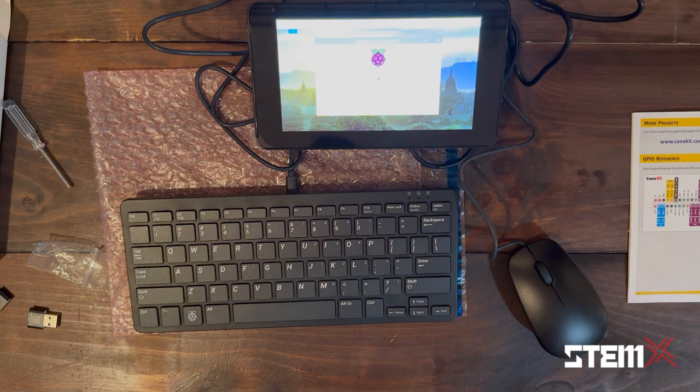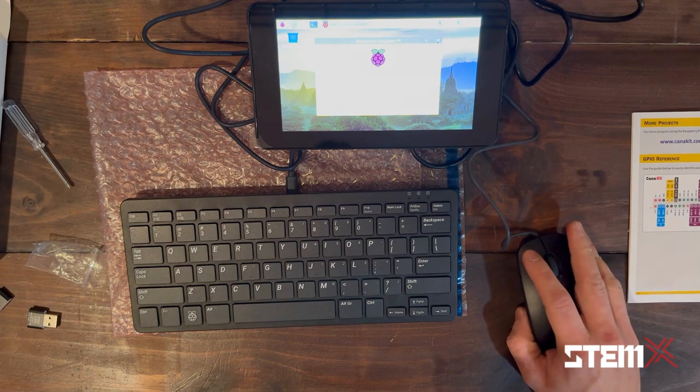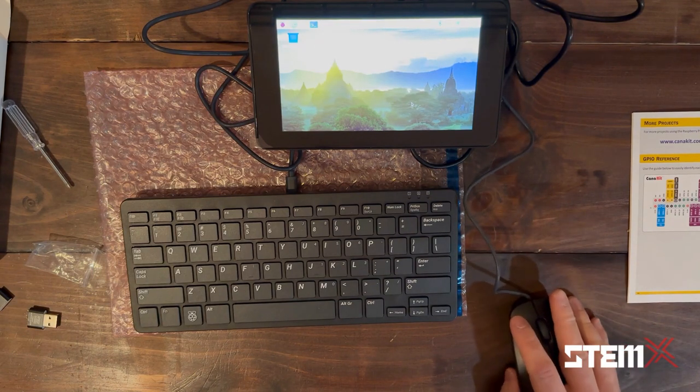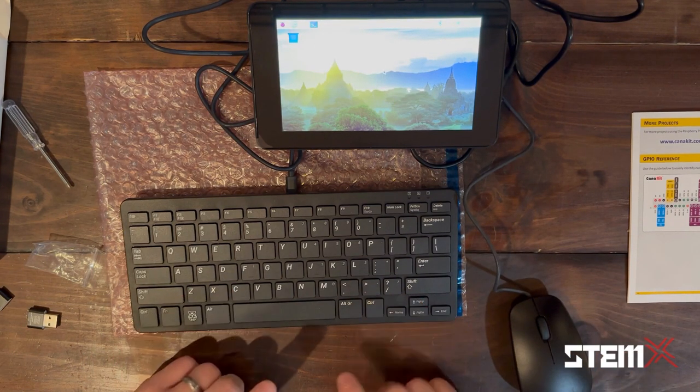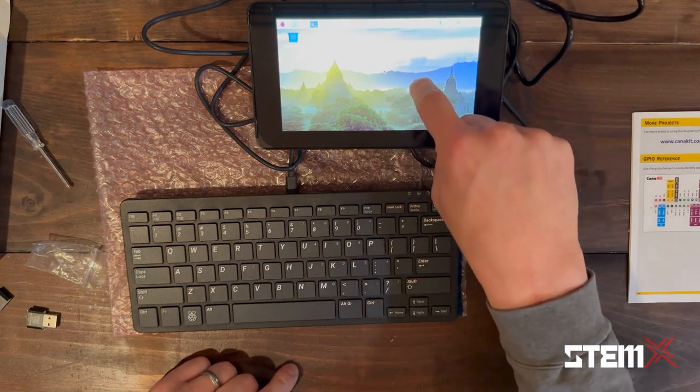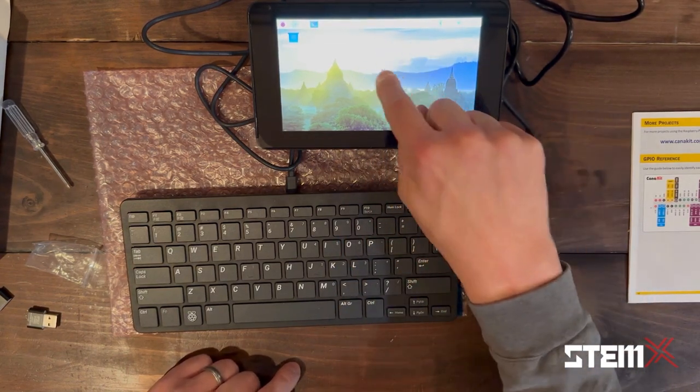And here we are on the Raspberry Pi desktop. You can see my mouse works, keyboard works, and this seven-inch touch screen is actually a touch screen. So if you don't want to use your mouse, you can actually just use the touch screen.